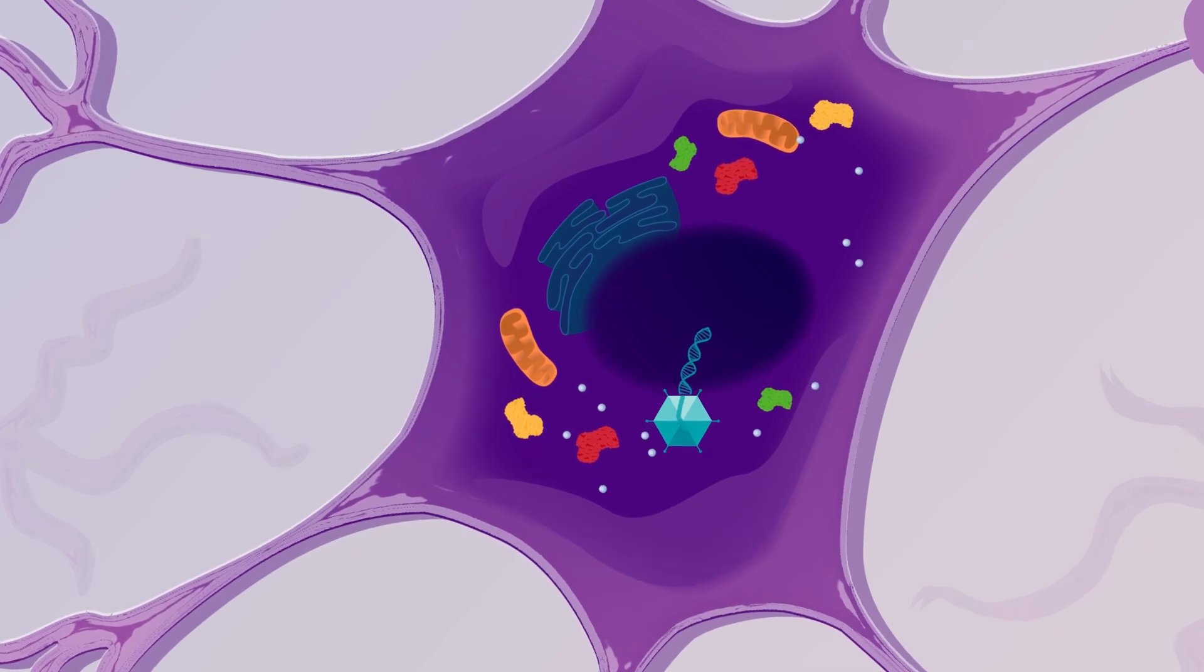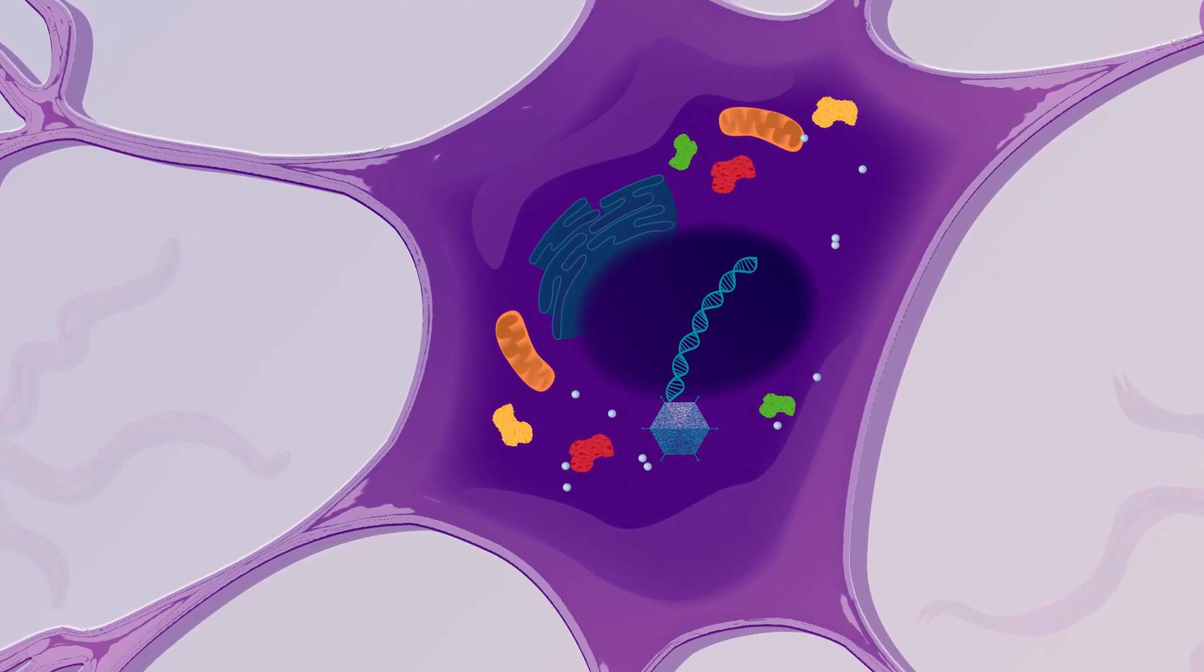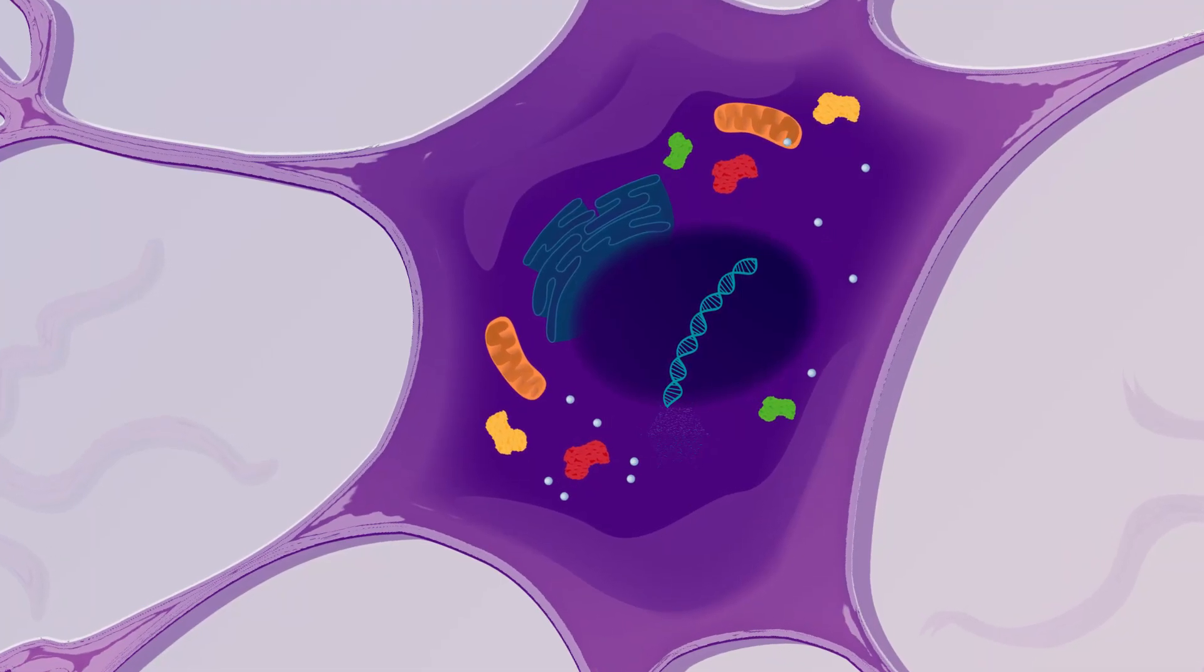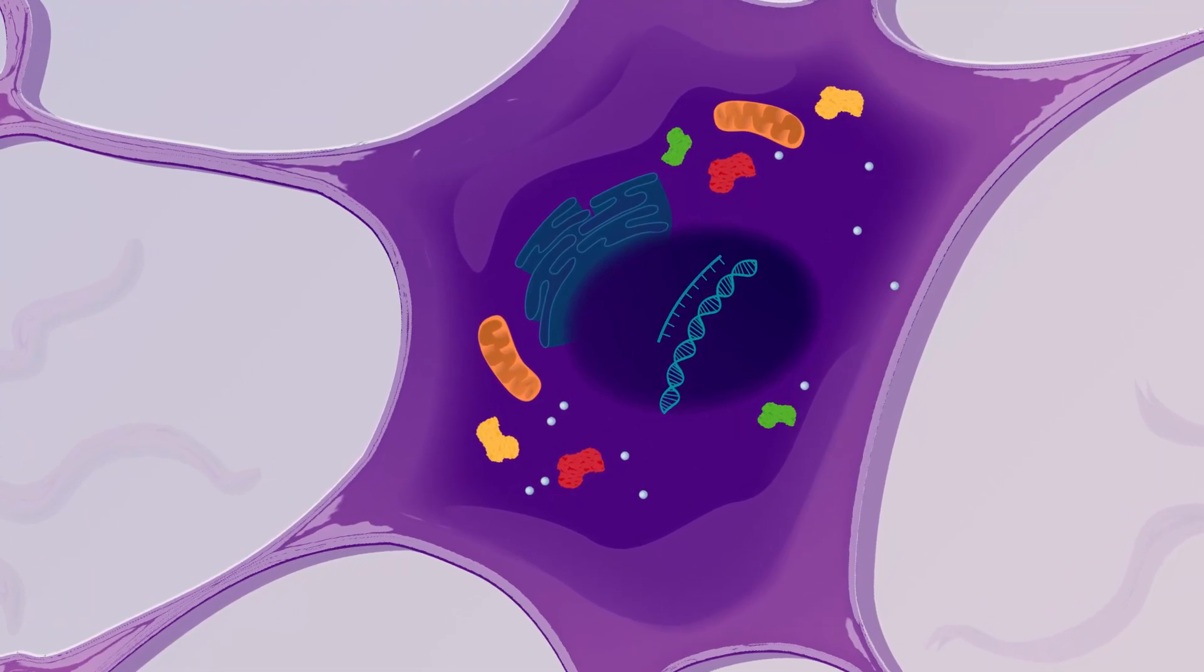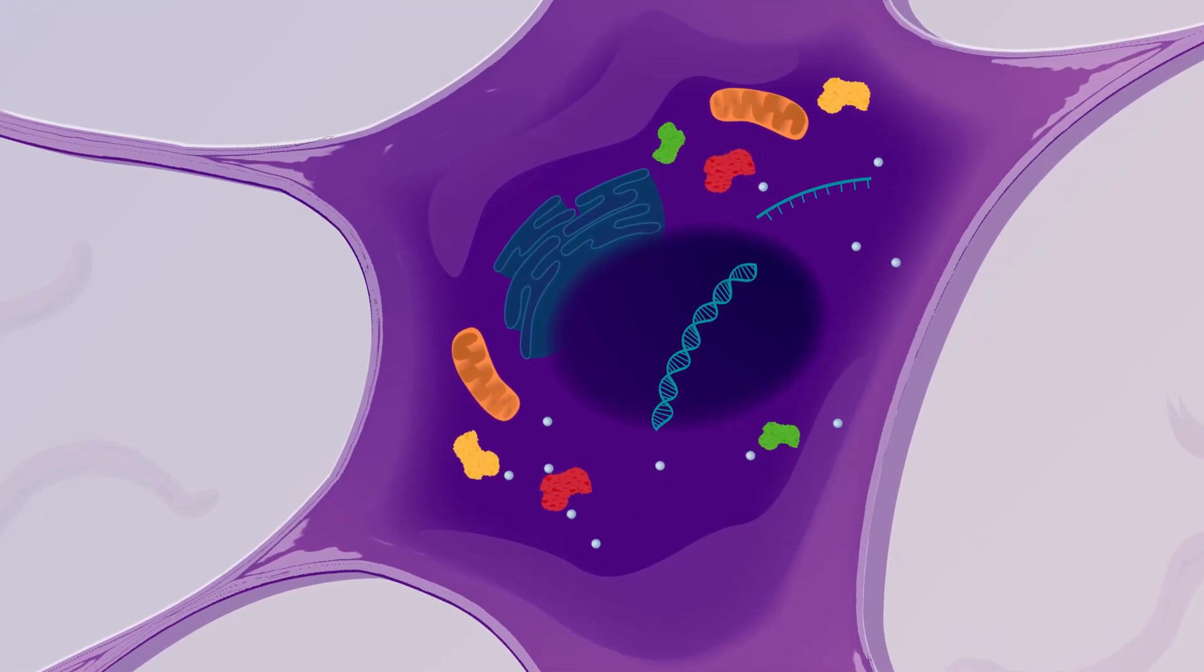Once the virus has delivered the SMN1 gene to the cell, the virus disintegrates. The healthy SMN1 gene is taken into the cell but does not integrate with the native DNA, and no other genes are disturbed.